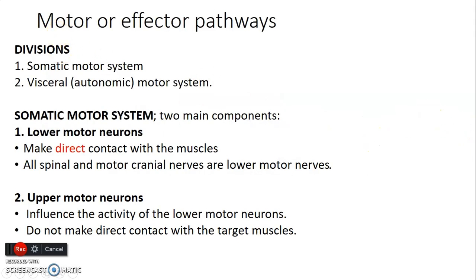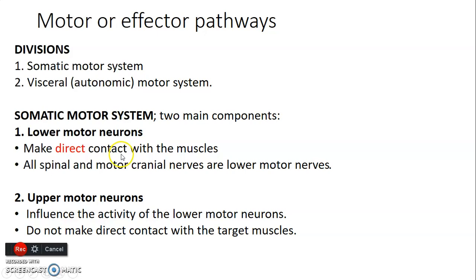What about the motor pathway? We have two different types of motor: somatic, from skeletal muscle, and visceral, from cardiac, smooth muscle, and glands — that's the autonomic motor system. The somatic motor system has two main components: a lower motor neuron and an upper motor neuron. The lower motor neuron is the one that innervates the muscle — it has direct contact with the muscle. All spinal and cranial nerves that have motor components are lower motor neurons.